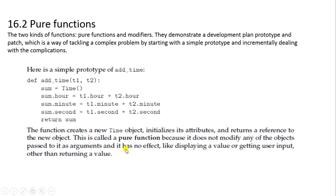The pure function has no side effects like displaying values or getting user input — it only returns a value. However, there is a slight mistake. Suppose my minutes are greater than 60 or my seconds are greater than 60. In those cases, I am supposed to carry over to the minutes column. Similarly, if my minutes are greater than or equal to 60, I am supposed to carry over to the hour.